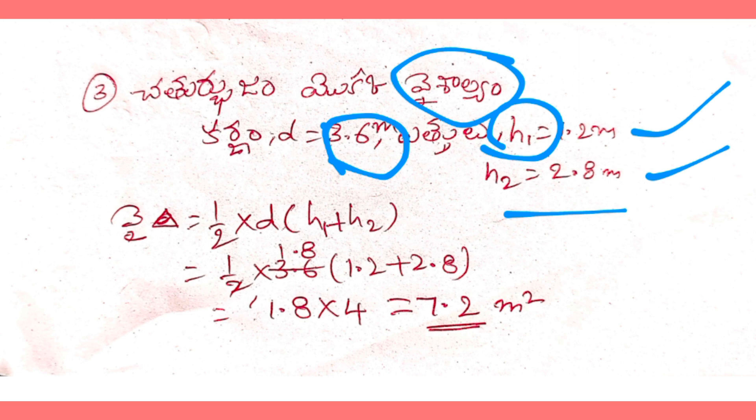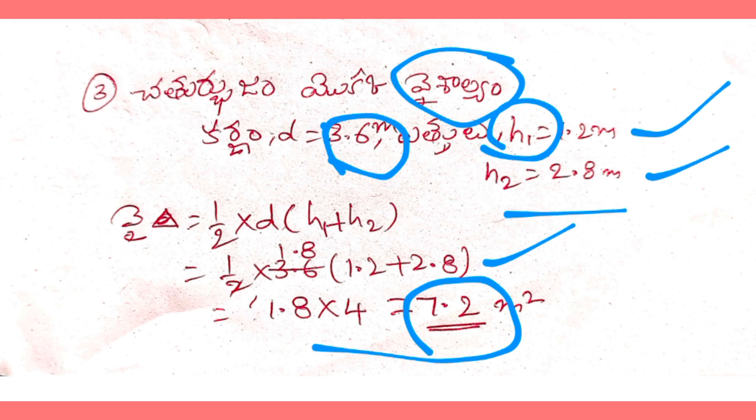H1 is 1.2 meters and H2 is 2.8 meters. The formula is half into D into H1 plus H2. So half into 3.6 into 1.2 plus 2.8. Half of 3.6 is 1.8, and 1.2 plus 2.8 is 4. So 1.8 into 4 equals 7.2.